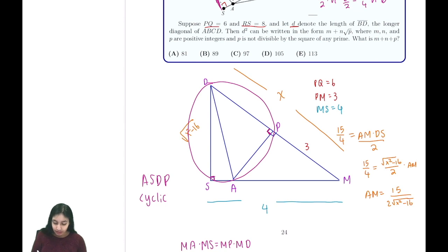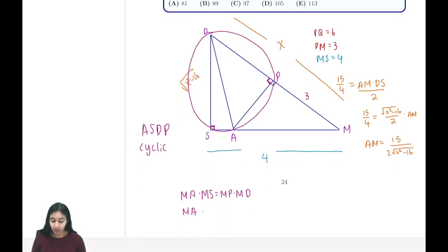Power of point tells us that MA times MS equals MP times MD. We know MS equals 4, MP equals 3, and MD is our variable x. From here we can tell that MA equals 3x over 4. Now we've expressed MA in two different ways, so we can set these equal and solve for x.